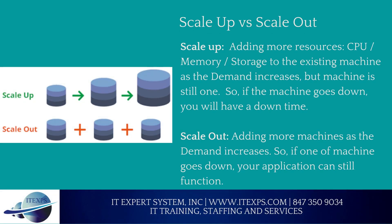Scale Up: Adding more resources — CPU, memory, storage — to the existing machine as demand increases, but the machine is still one. So if the machine goes down, you will have downtime. Scale Out: Adding more machines as demand increases, so if one machine goes down, your application can still function.